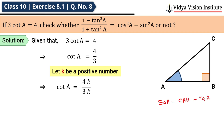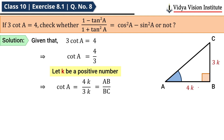cot is the reciprocal of tan, so cot A = adjacent side / opposite side. From angle A, the adjacent side is AB and the opposite side is BC. So cot A = AB/BC. Comparing: AB = 4k and BC = 3k.